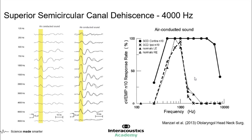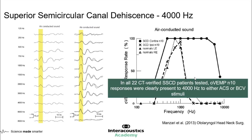One other remarkable study by Manzari et al. in 2013 looked at superior canal dehiscence with air-conducted sound — using the hydromechanical force of sound pressure to activate that third window. In a small but significant population, they managed to measure air-conducted VEMP measurements all the way up to 4000 Hz, and we can see the tuning effect compared to norms. The superior canal dehiscence group shows an inverted V-shape tuning across the full frequency range, almost resembling a cochlear response. All 22 CT-verified third window patients clearly had responses right up to 4000 Hz — quite a remarkable finding.